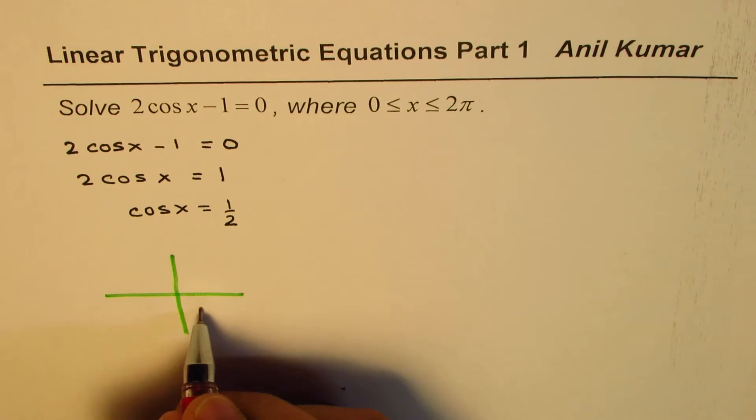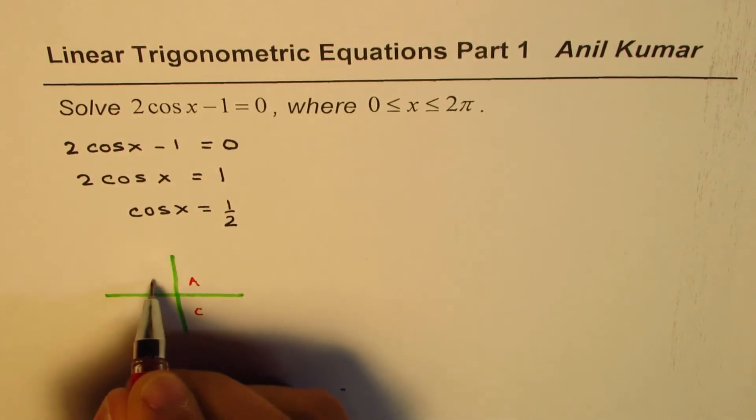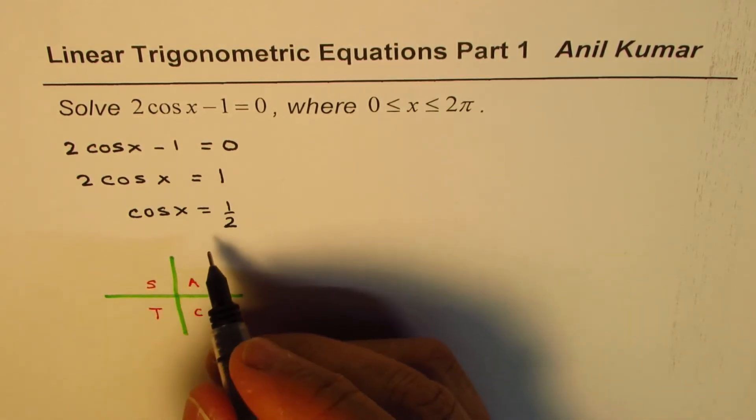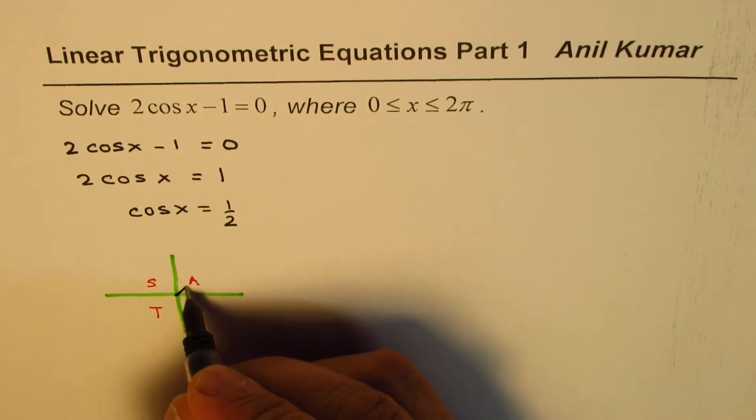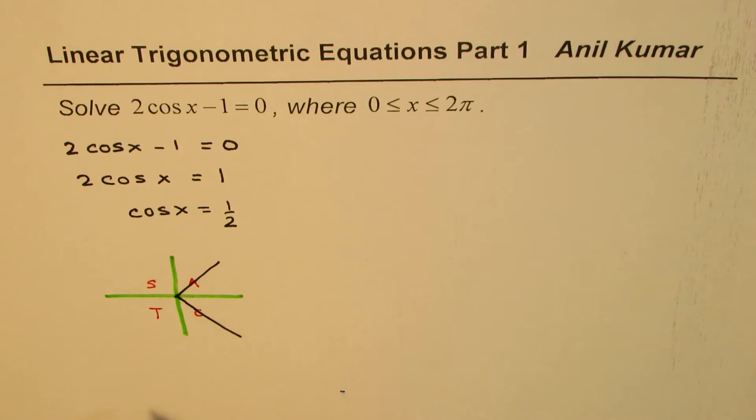So we know cosine is positive in quadrant 4 and in quadrant 1, CAST. So we are looking for 2 solutions and these are in quadrant 1 and in quadrant 4. So these are the 2 solutions we are looking for.